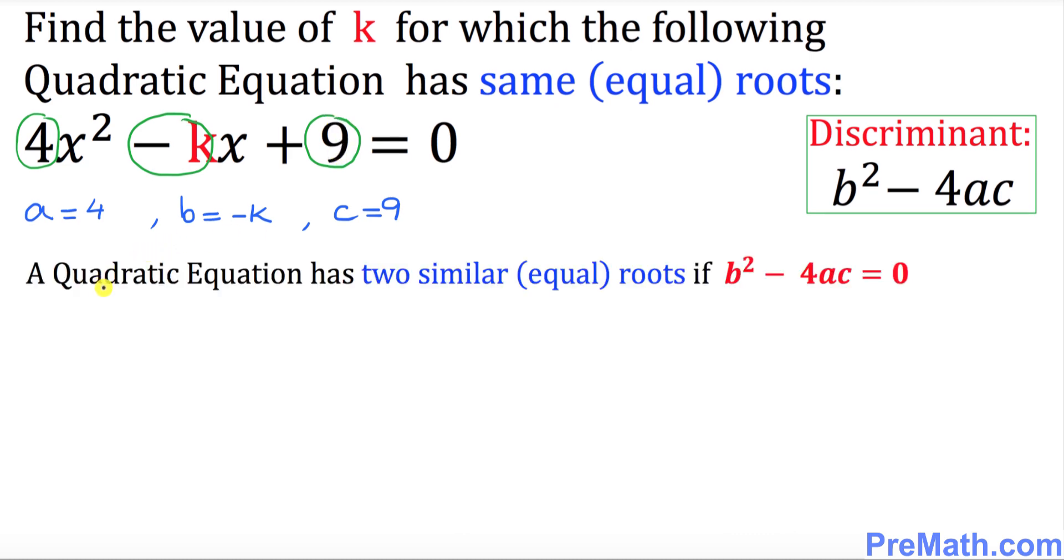And one more thing, always remember that a quadratic equation has two similar or equal roots or solutions if the discriminant b squared minus 4ac is equal to zero. The discriminant must be equal to zero if we want two similar solutions.